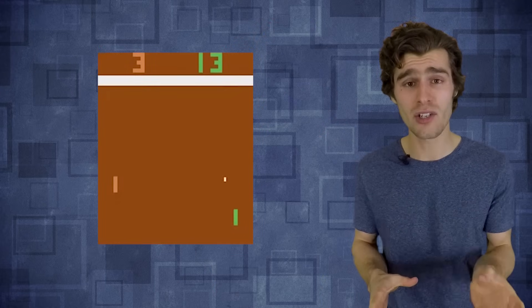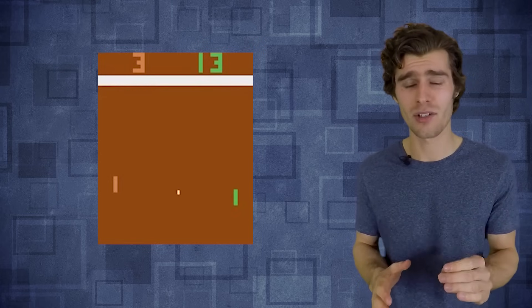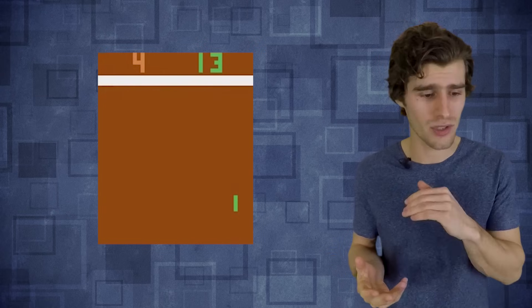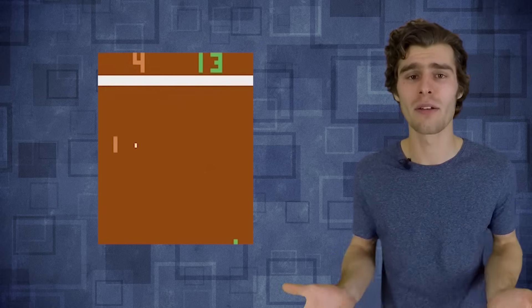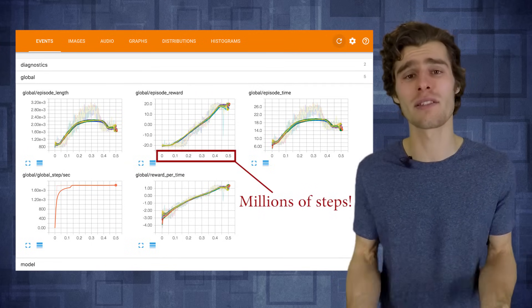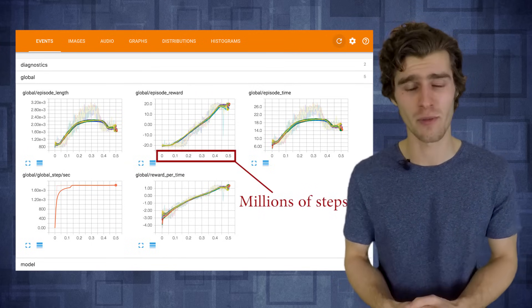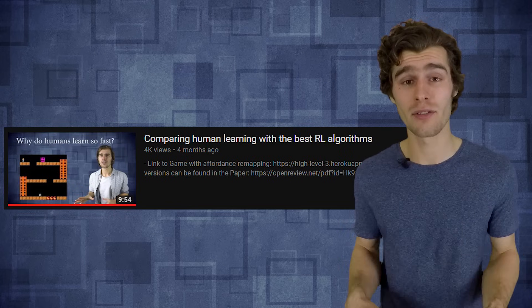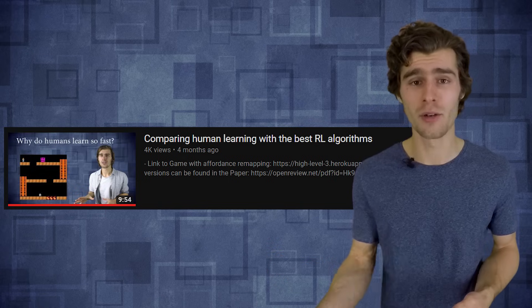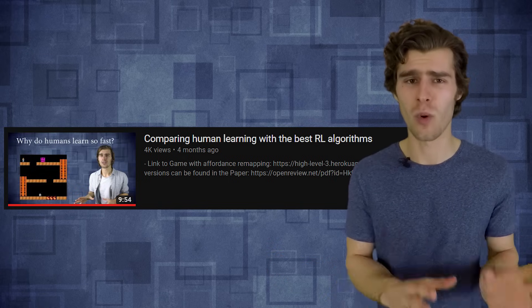So in the case of pong, for example, our agent should learn that it's only the actions right before it hits the ball that are truly important. Everything else, once the ball is flying off, doesn't really matter for the eventual reward. And so the result of this sparse reward setting is that in reinforcement learning, algorithms are typically very sample inefficient, which means that you have to give them a ton of training time before they can learn some useful behavior. And I've made a previous video to compare the sample efficiency of reinforcement learning algorithms with human learning that goes much deeper into why this is the case.